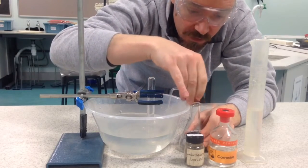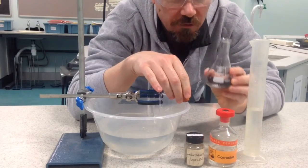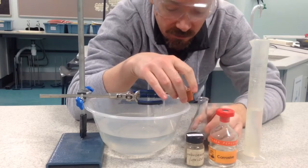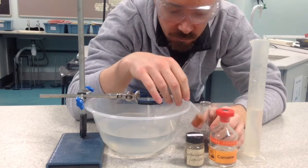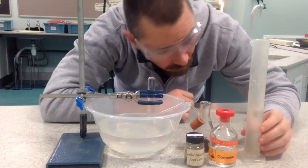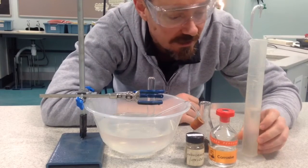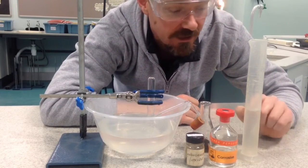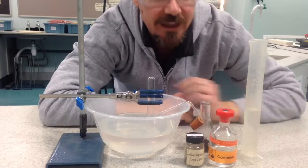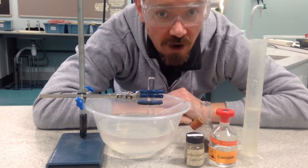Then you will need to put two spatulas of manganese oxide into your conical flask and you will need to measure out, I've measured out 40 milliliters of hydrogen peroxide into the measuring cylinder. Now the next bit happens fast.